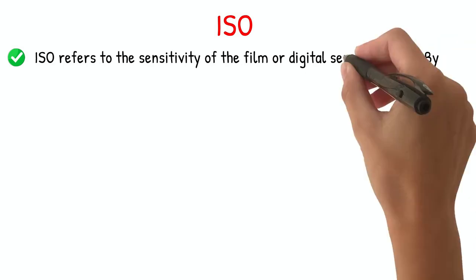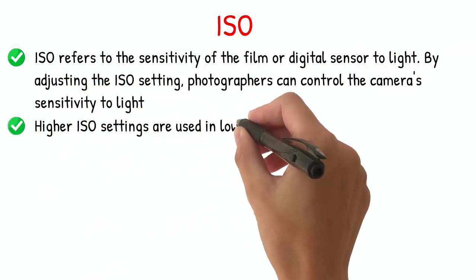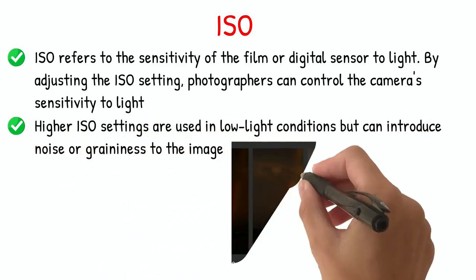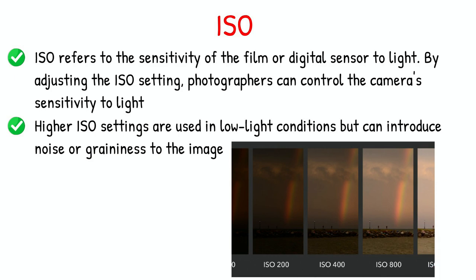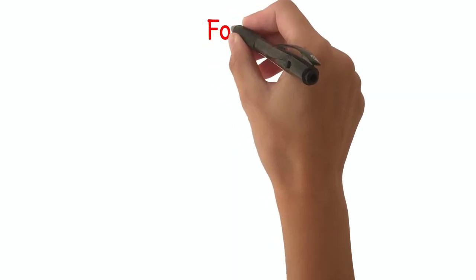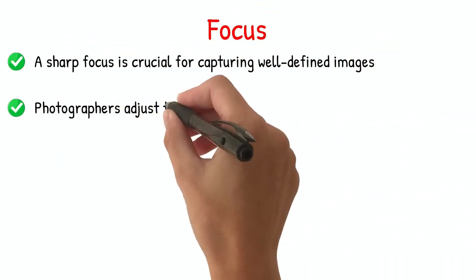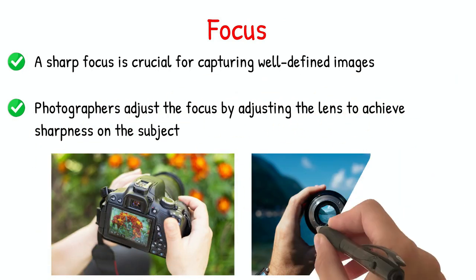ISO refers to the sensitivity of the film or digital sensor to light. By adjusting the ISO setting, photographers can control the camera's sensitivity to light. Higher ISO settings are used in low-light conditions but can introduce noise or graininess to the image. A sharp focus is crucial for capturing well-defined images. Photographers adjust the focus by adjusting the lens to achieve sharpness on the subject.